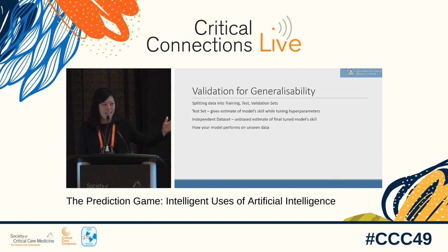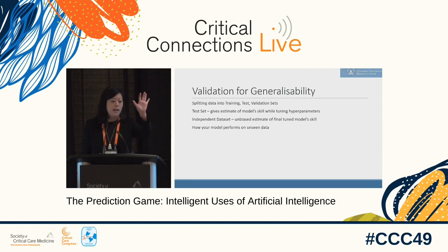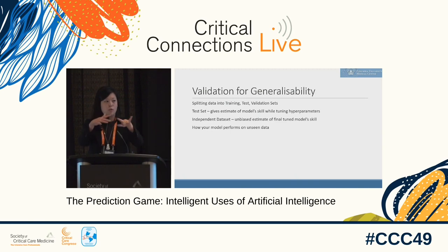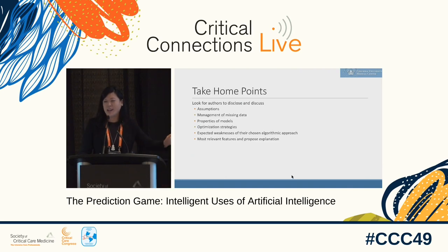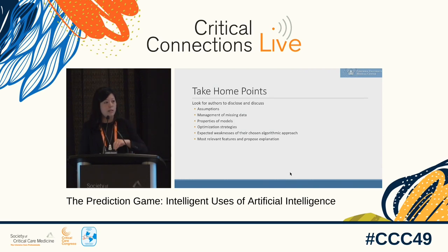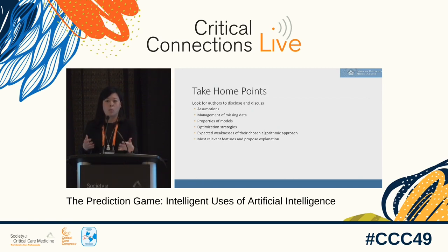Validation is super important. You should have a training set and a testing set — you learn from the data, see how it's performing, tweak the model, and then have a holdout set not used in the hypothesis generation stage to test that the model is working. It's even better if that test set is from a different institution — that's generalizability. My take-home points: look for assumptions, management of missing data, and properties of the models in the methods section. How do they optimize their model? What are the expected weaknesses? Authors should tell you why they chose that model and what they expect it to be good at or bad at. Thank you.